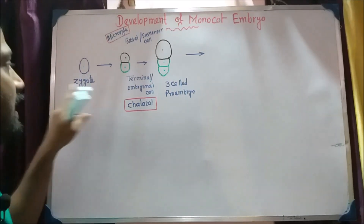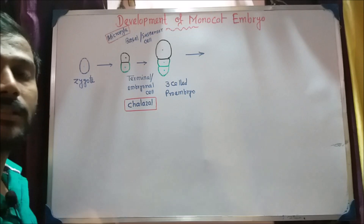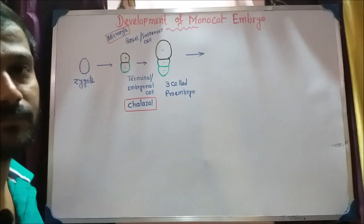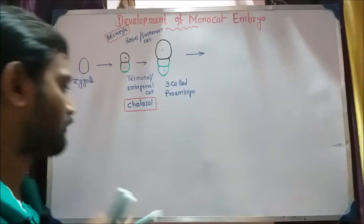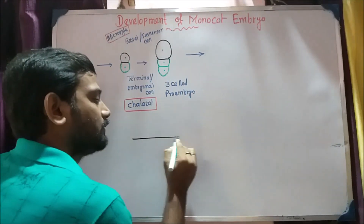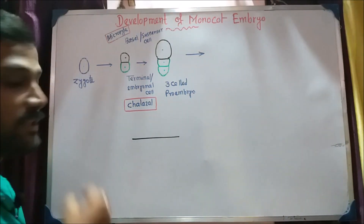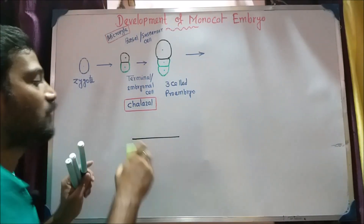The first thing is the transverse division. This is the transverse division — the transverse division of the same cell.